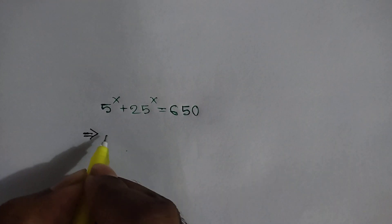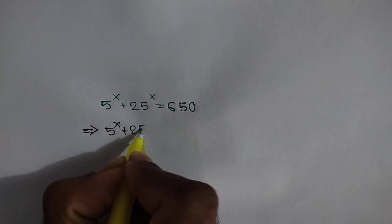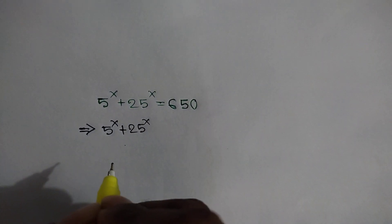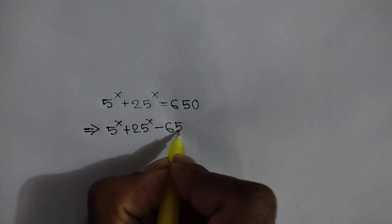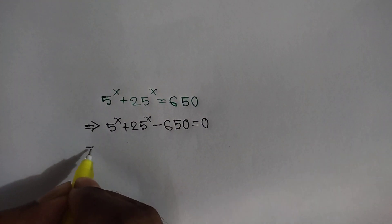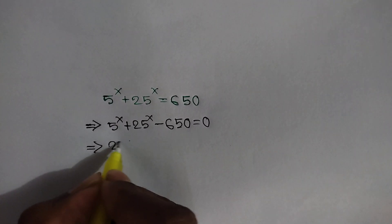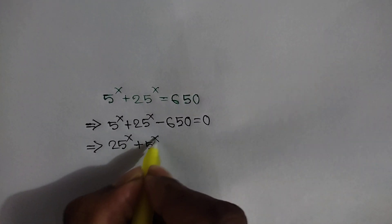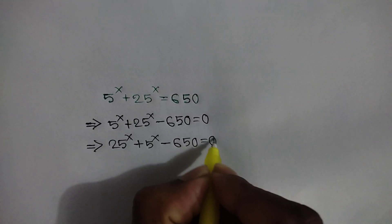5 to the power x plus 25 to the power x equals 650. We can get the left side and write minus 650 is equal to 0. Or, rearranging it, we can write 25 to the power x plus 5 to the power x minus 650 is equal to 0.